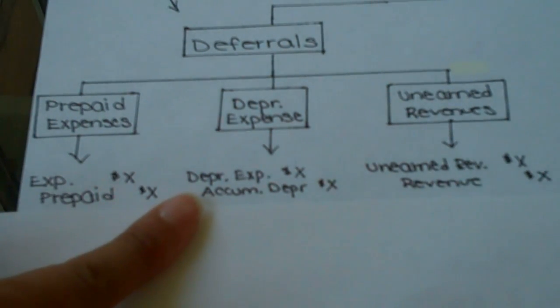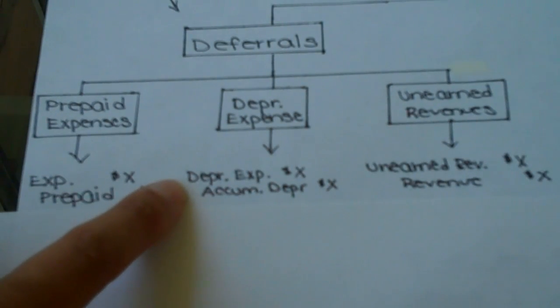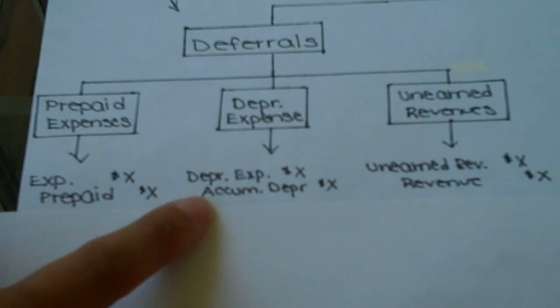Depreciation expense, again to follow that matching principle, so we go ahead and allocate a portion of the cost of that asset to the income statement by putting it in the depreciation expense account. And then we put the offset account is called accumulated depreciation. This is a new account in this chapter that is a contra asset account, so you'll want to read more about that one to understand it a little better in your book.